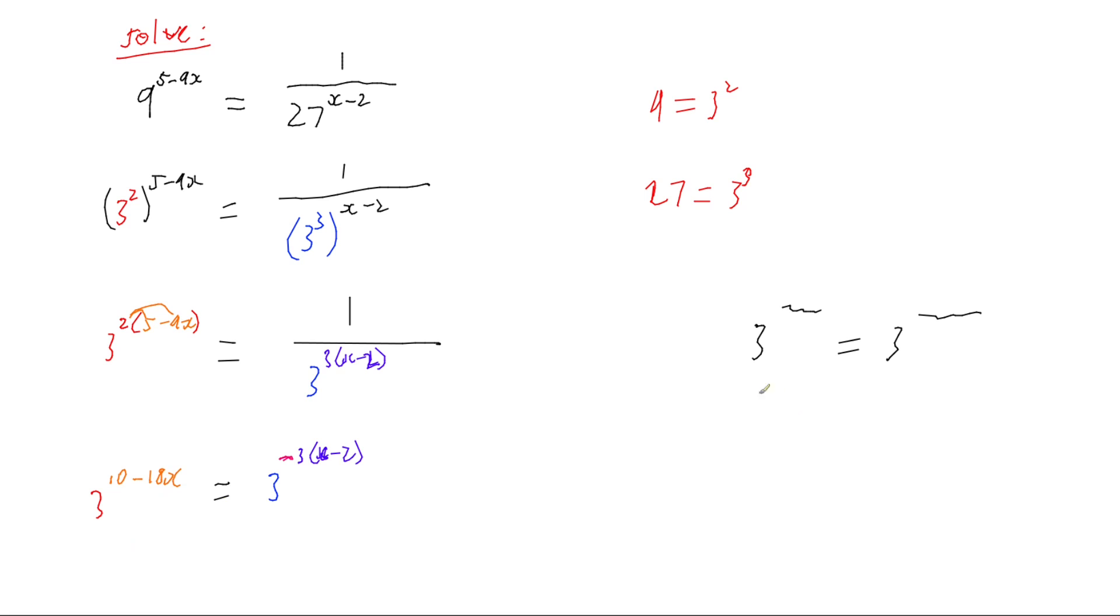And so now that I've got it in this form, what this means is that if I've got 3 to the something equals 3 to the something else, because my bases are the same, that means that these two must be equal. So I can just equate my two powers.